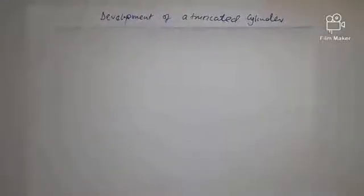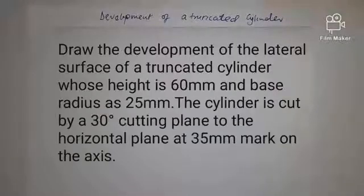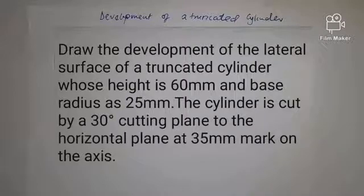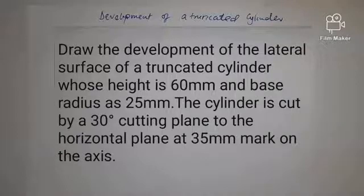Welcome. We are going to look at development of the truncated cylinder. The question reads: draw the development of the lateral faces of a truncated cylinder whose altitude is 60 millimeters and base radius is 25 millimeters, when it is cut by a 30-degree cutting plane which cuts its axis at the 35 millimeter mark. We are going to draw the development of a truncated cylinder, so our plan is a circle.